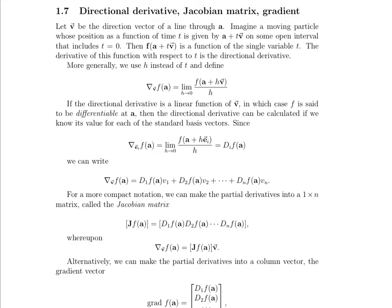Now for the directional derivative. Maybe we don't care how the function f is changing just as one particular component of a is changing — maybe we care how f is changing as we're moving along some vector v. Let v be a direction vector of a line through the point a. Imagine a moving particle whose position as a function of time t is given as a, the stationary point where it starts, plus t times v. Note that when we write the function value f of a plus tv, that's a function of the single variable t.